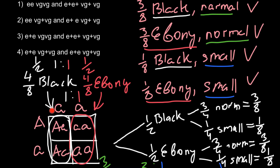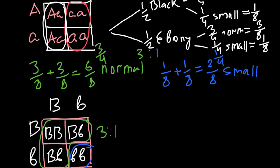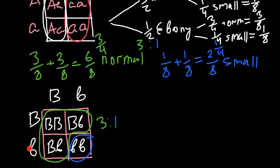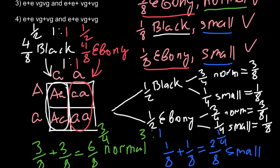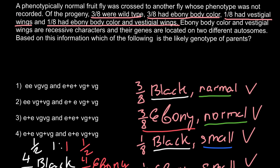So what have we found? For the first trait (body color), one parent must be heterozygous and the other homozygous recessive. For the second trait (wing size), one parent must be heterozygous and the other parent also must be heterozygous.